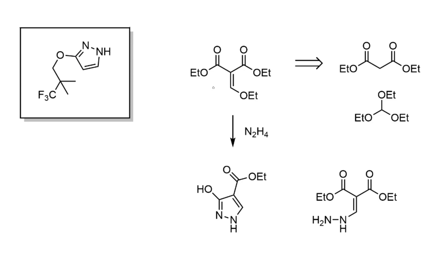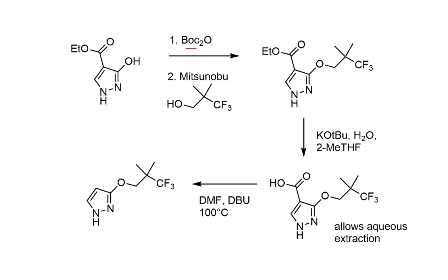A different route to the pyrazole was also described, starting from diethyl ethoxymethylene malonate. While this is commercial, you could easily make it from the condensation of diethyl malonate with triethyl orthoformate. In much the same way, treatment with hydrazine gives Michael addition first, then cyclization onto the ester to form the ring. Boc anhydride again protects one nitrogen for a Mitsunobu reaction, and then the ethyl ester was hydrolyzed using potassium tert-butoxide in 2-MeTHF, followed by decarboxylation by heating with a base in DMF.